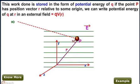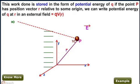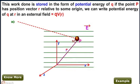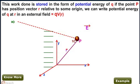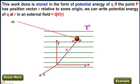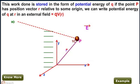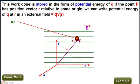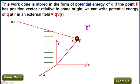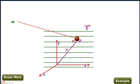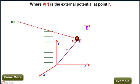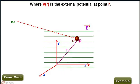If the point P has position vector R relative to some origin, we can write potential energy of Q at R in an external field which equals Q into potential at R. Where V(r) is the external potential at point R.